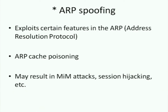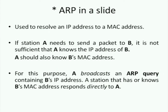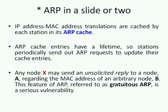What is ARP? ARP is used to resolve an IP address to a MAC address. Every machine on the network will have an ARP cache that stores these translations — IP address to MAC address mappings. If station A needs to send a packet to B, it's not sufficient that A merely knows B's IP address; A also needs to know B's MAC address. If A doesn't know it, A broadcasts an ARP query asking who has B's MAC address given B's IP. A station that knows B's MAC address responds directly — not broadcast — to A.